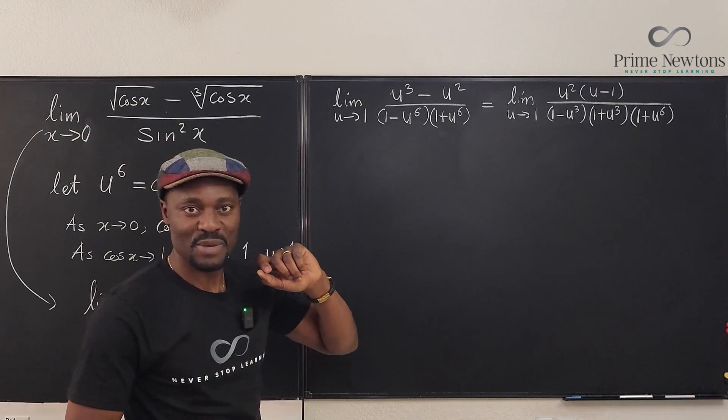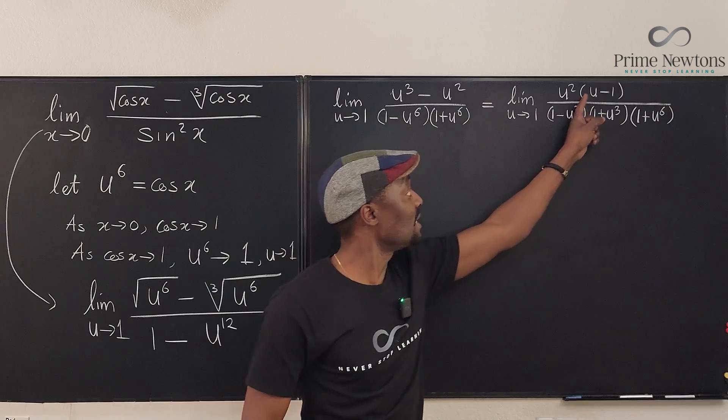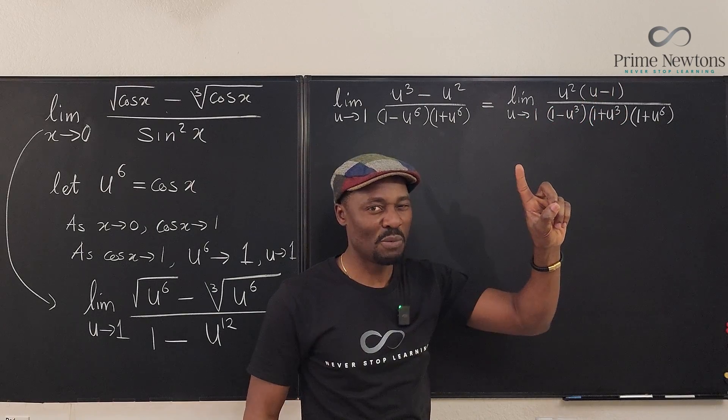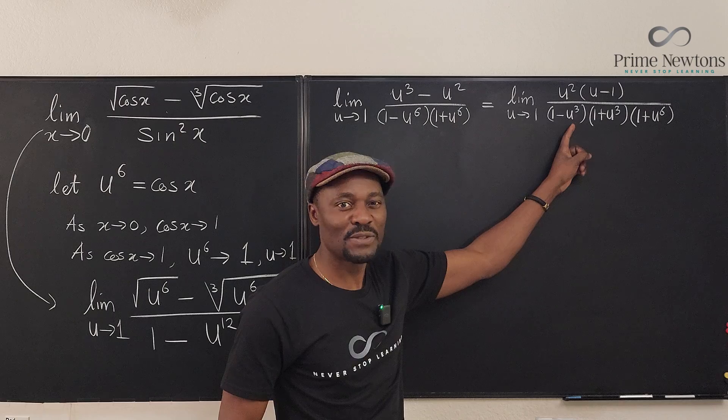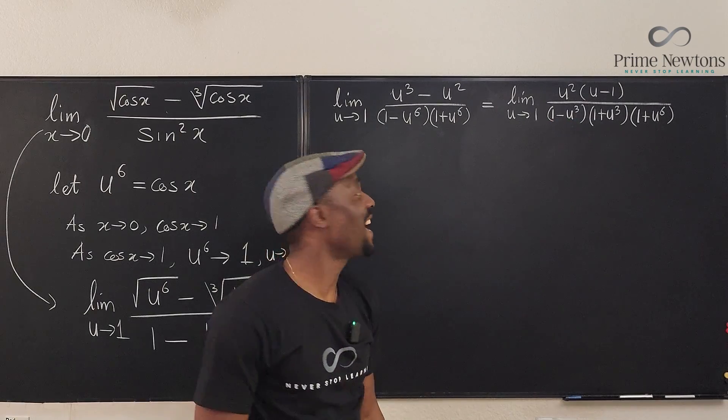But it still doesn't help me. I need to get rid of this u minus one because that's where the zero is coming. You see, it's going to be zero on top and there's going to be zero in the bottom. So I need one more move. This is the difference of two cubes, one cubed minus u cubed. And that's where we get to a final answer.